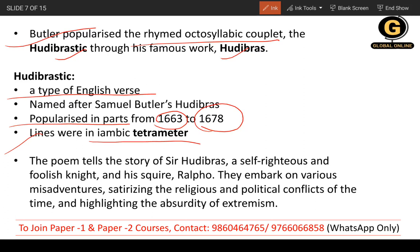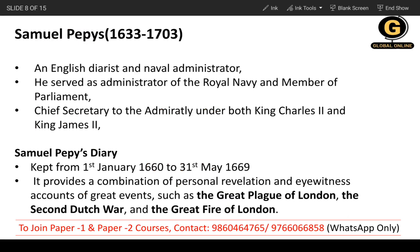The lines of Hudibrasic verse are in iambic tetrameter. The story is about Sir Hudibras, a very self-righteous and foolish knight, and his squire Ralf — like Sancho and Don Quixote. They embark on various misadventures, and the work satirizes religious and political conflicts, calling it a foolish art.